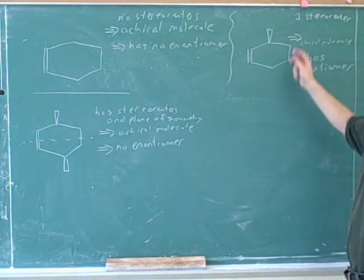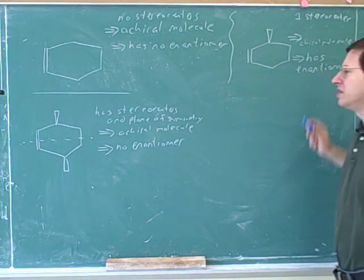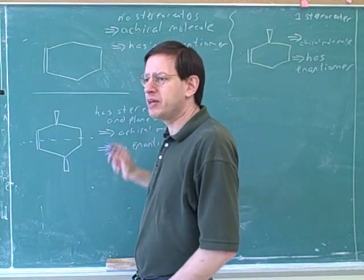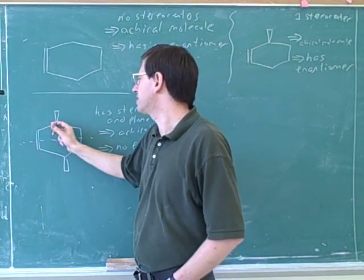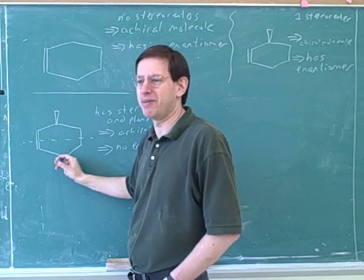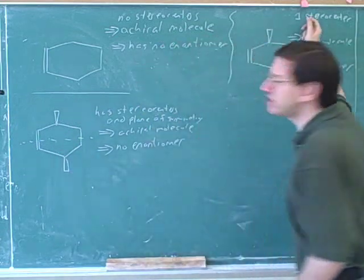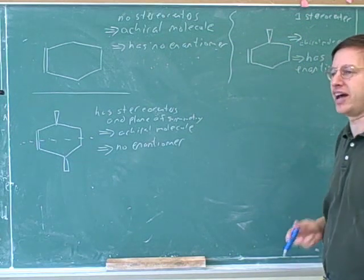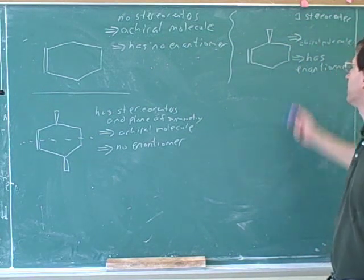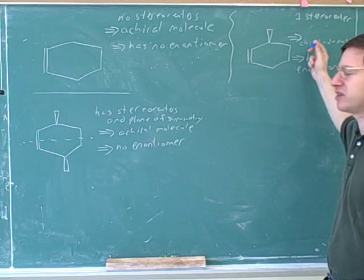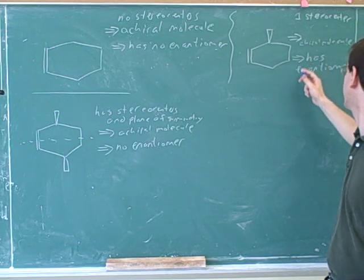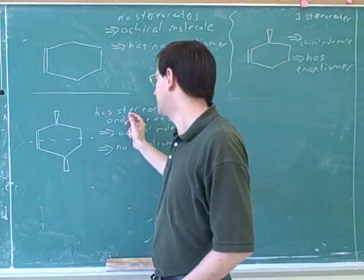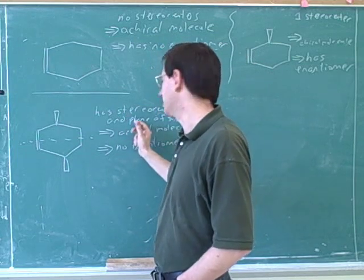If there's only one stereocenter, you know it has an enantiomer. Notice that there's no way you can be symmetrical unless you have two stereocenters. What's happening here is the top stereocenter is kind of canceling out the bottom stereocenter. But if there's only one stereocenter, there's no way it can get canceled out because there's no other stereocenter to cancel it out. So with only one stereocenter, it would be impossible to have a plane of symmetry — you don't even have to check for that.